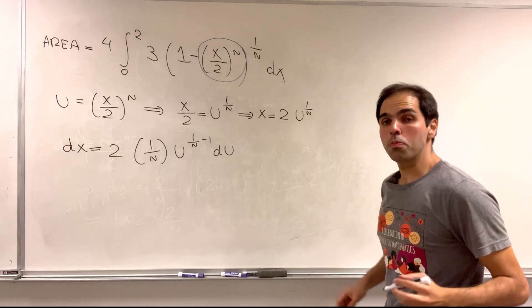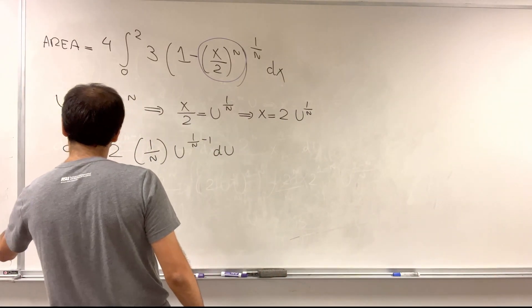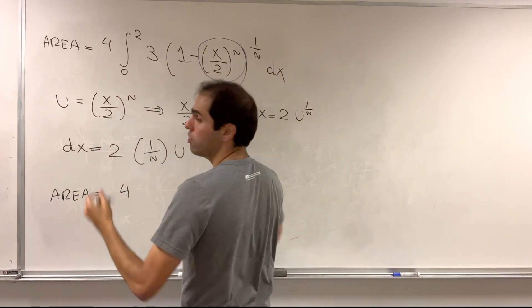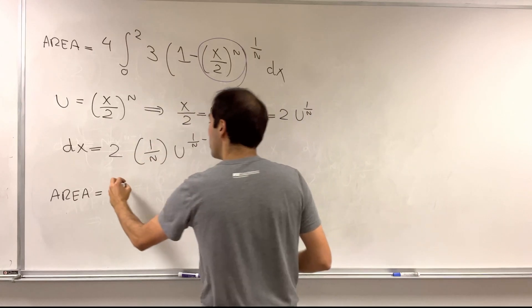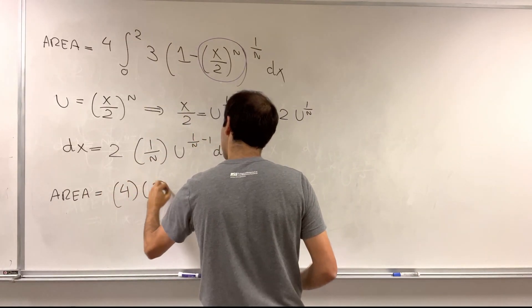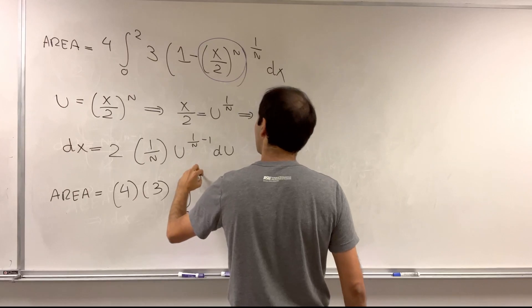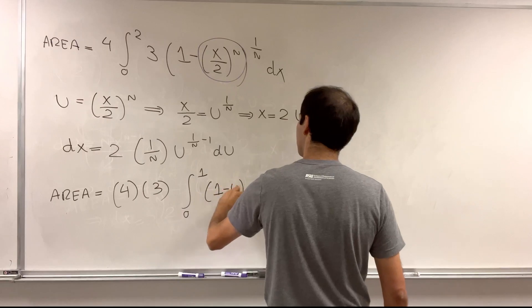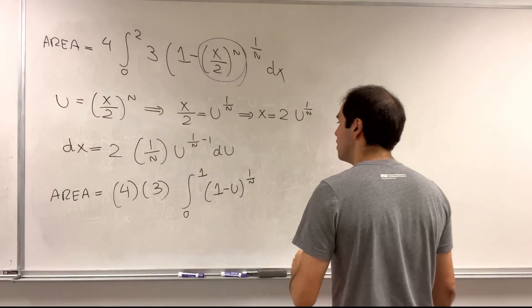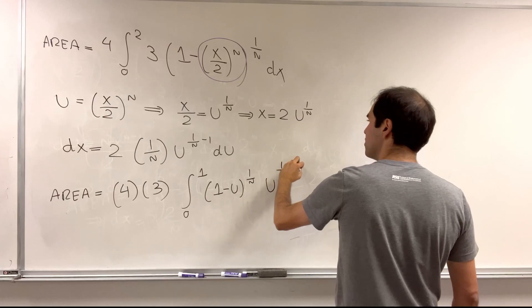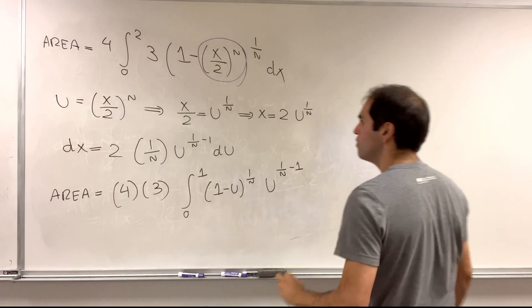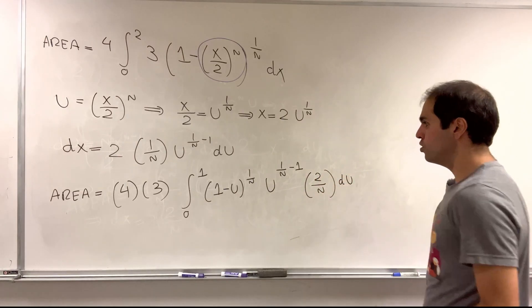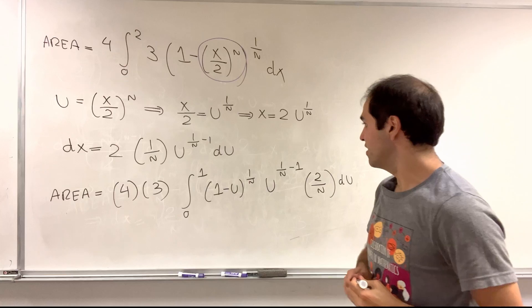Now we can just plug this in. The area now becomes we still have the 4 from the 4 quadrants, we have the 3, and integral from 0 to 1 of this becomes 1 minus u to the 1 over n, u to the 1 over n minus 1, and then we have this 2 over n du. And then this 2 will also come out very soon.